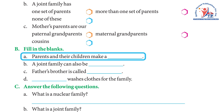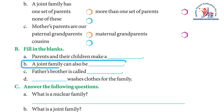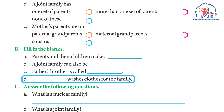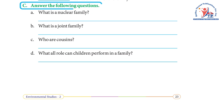Fill in the blanks. A — parents and their children make a ___. Answer: a family. B — a joint family can also be ___. Answer: small. C — father's brother is called ___. Answer: uncle. D — ___ washes clothes for the family. Answer: mother.